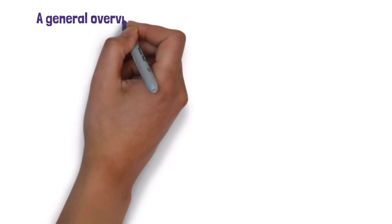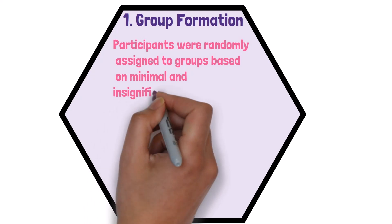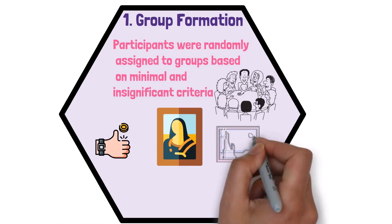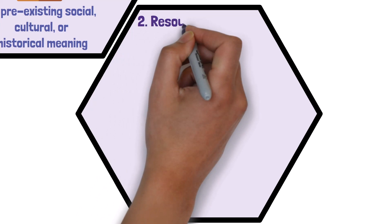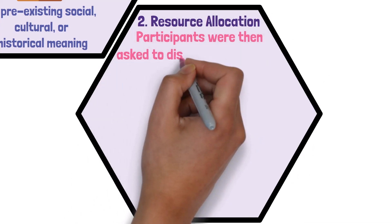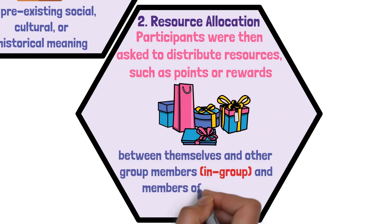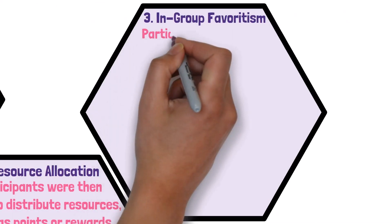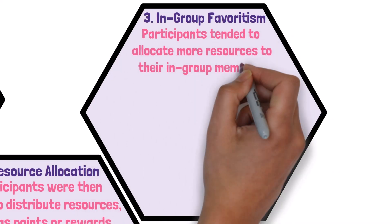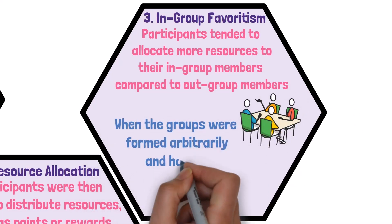In Tajfel's experiments, group formation involved randomly assigning participants to groups based on minimal criteria such as a coin flip or preference for abstract paintings — groups with no pre-existing social or historical meaning. Participants were then asked to distribute resources such as points or rewards between in-group and out-group members. Results consistently showed that participants allocated more resources to their in-group, demonstrating in-group favoritism even when groups were formed arbitrarily.